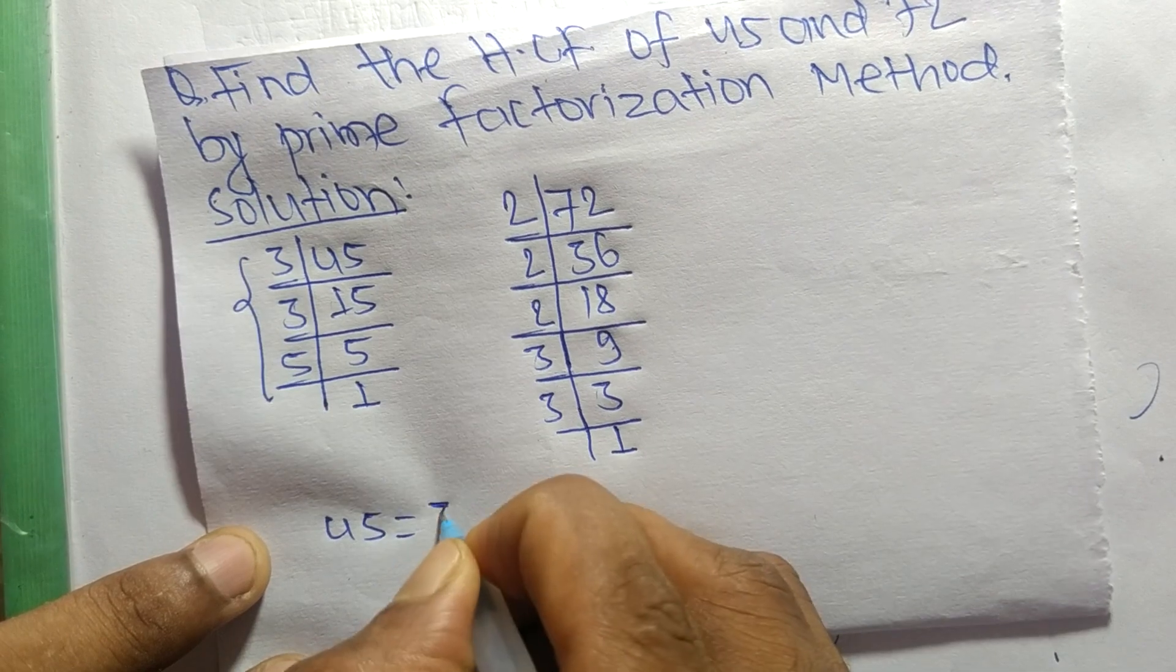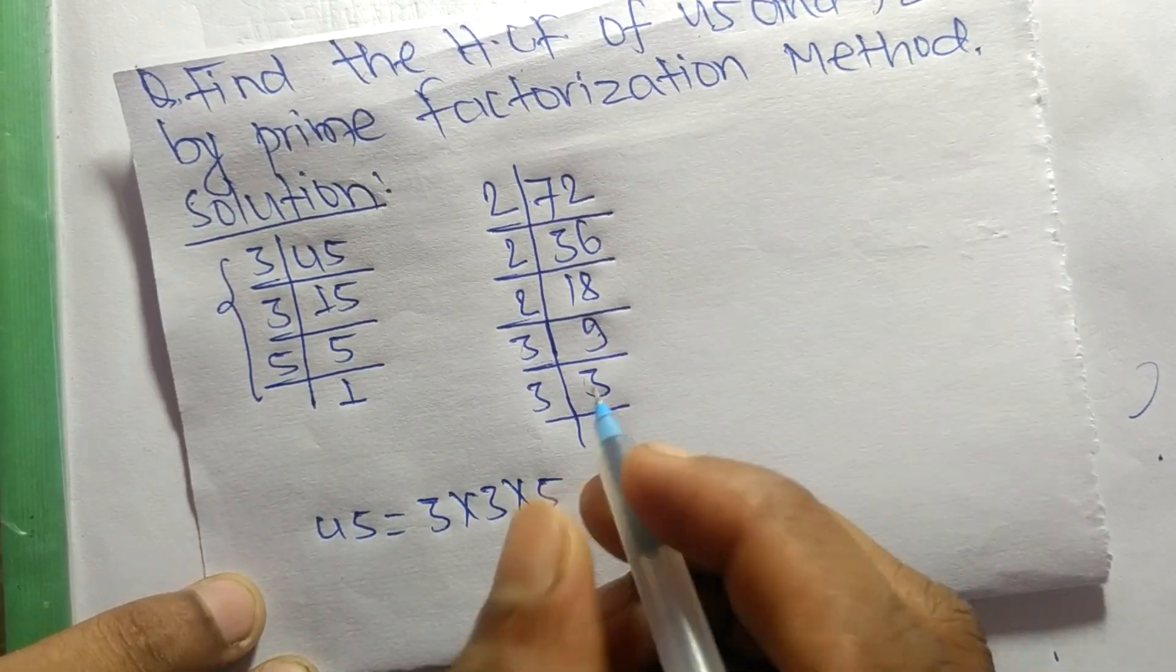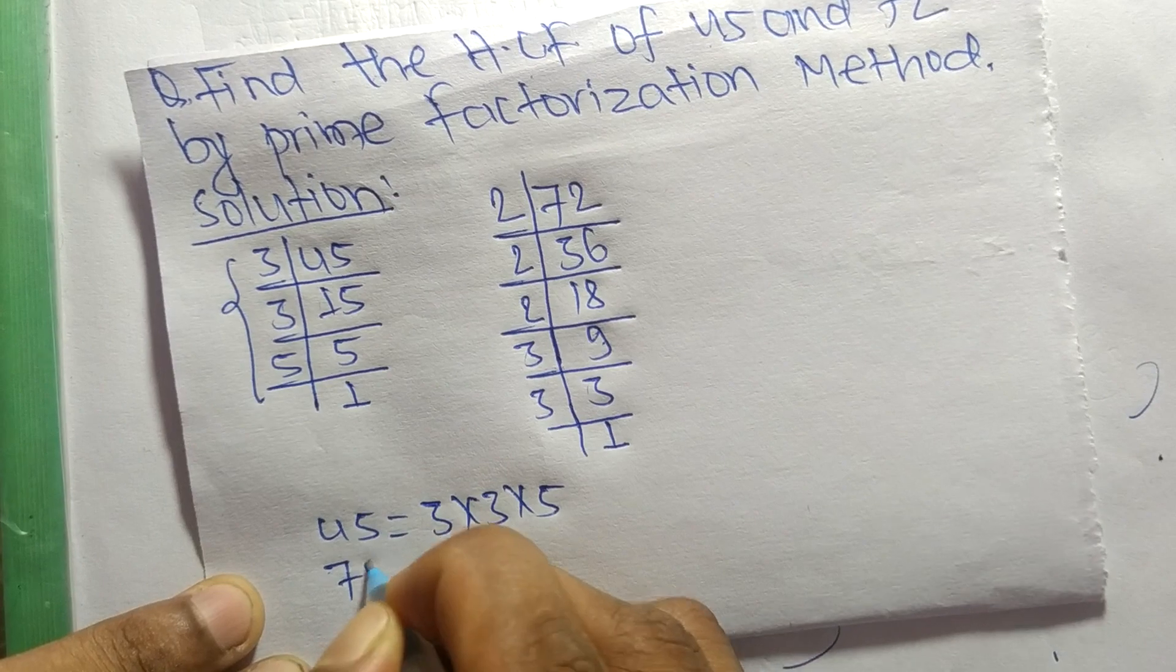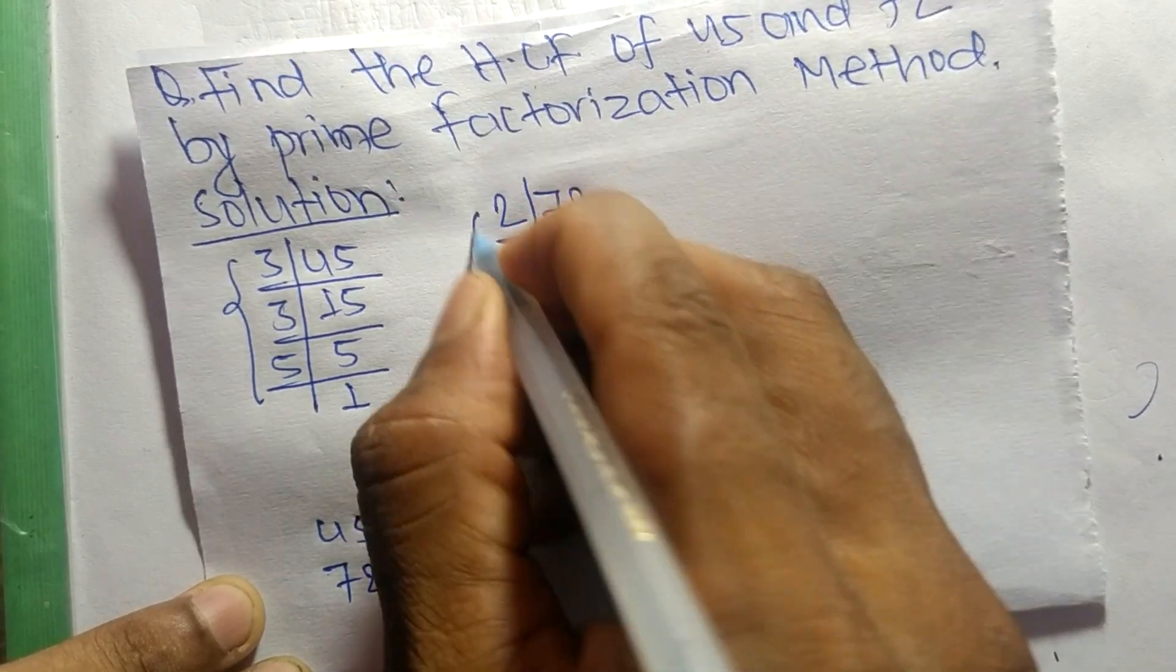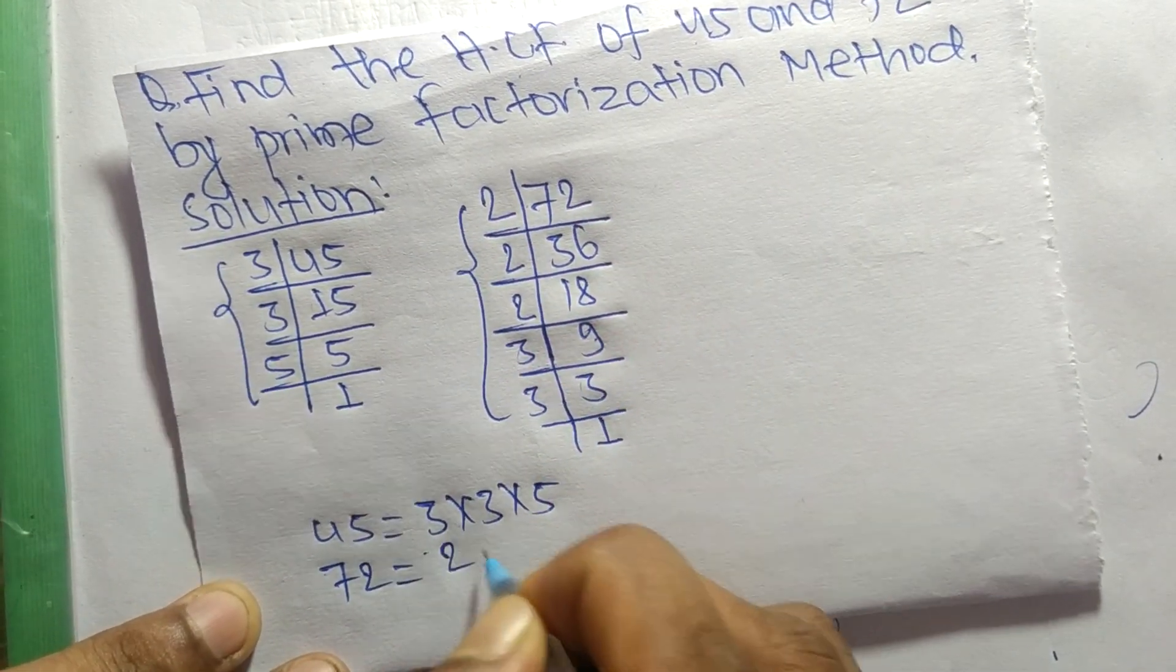Similarly, 72 equals 2 times 2 times 2 times 3 times 3.